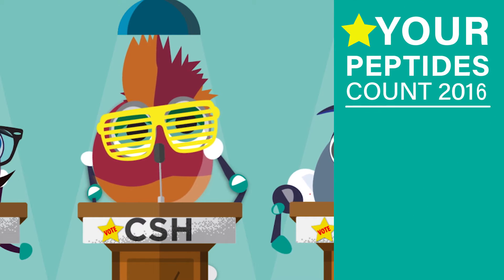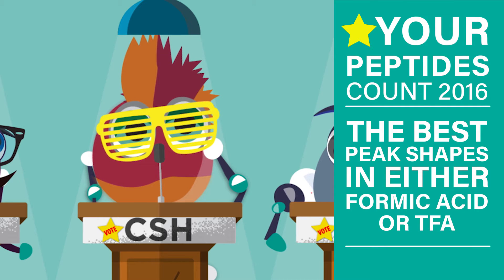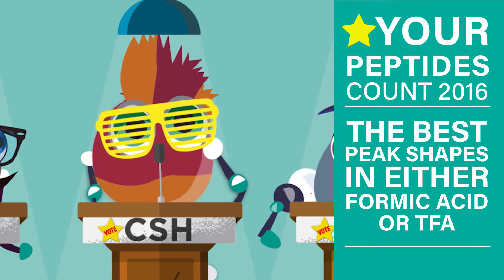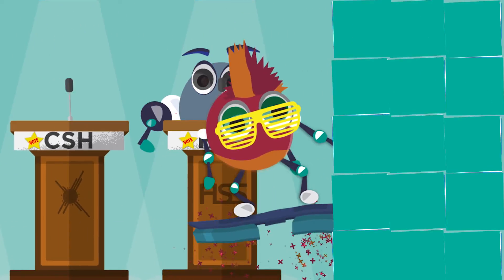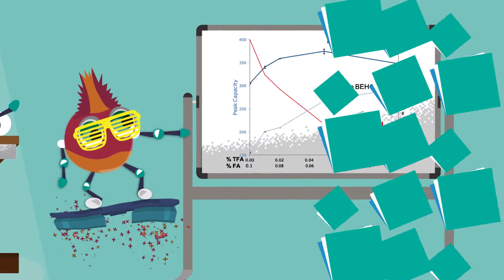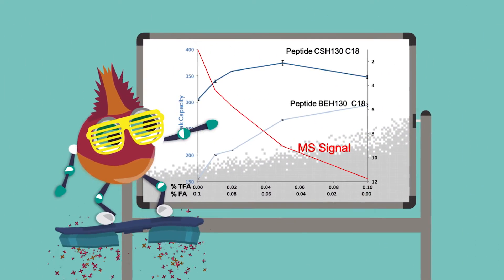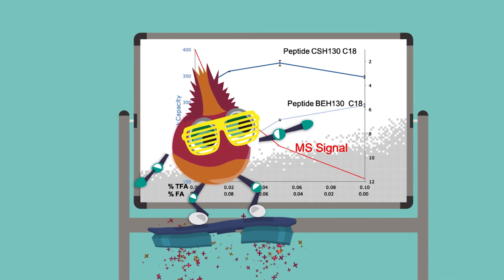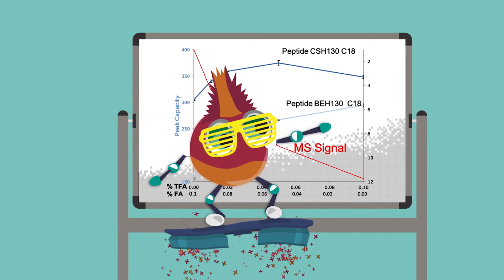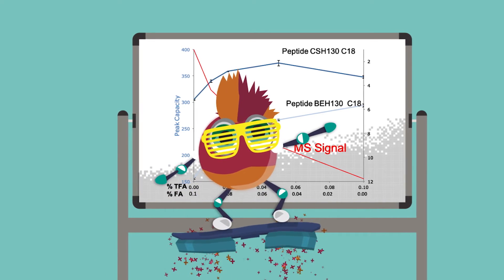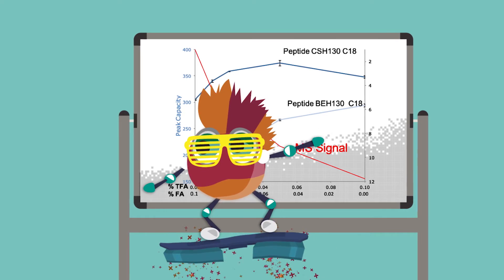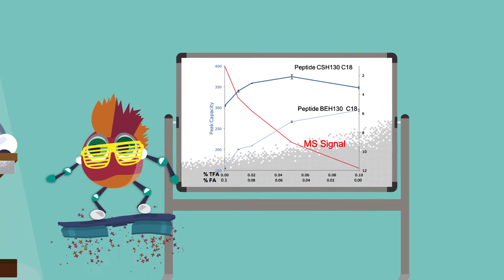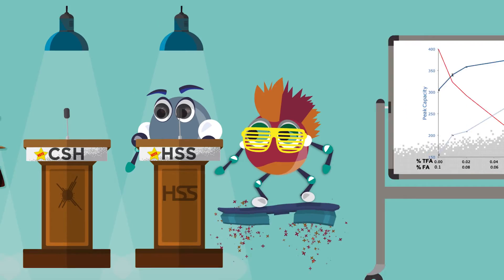I am supercharged and developed for incredible peak shapes in either formic acid or TFA compared to other candidates. And look here, BEH — because my peaks are sharp and narrow, I can separate more peaks in one run. So not only do I have higher peak capacity in formic acid, but I also provide good MS signal.